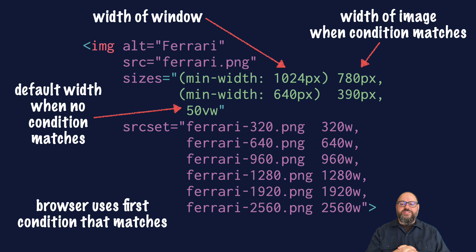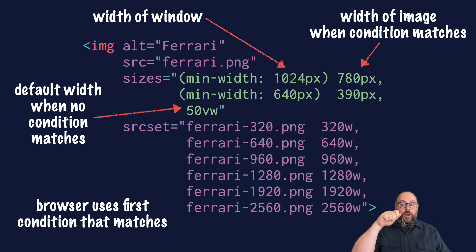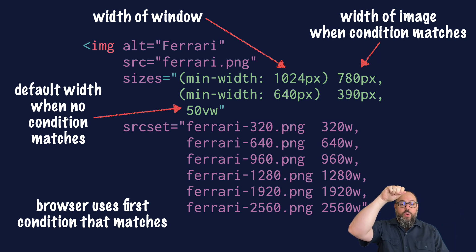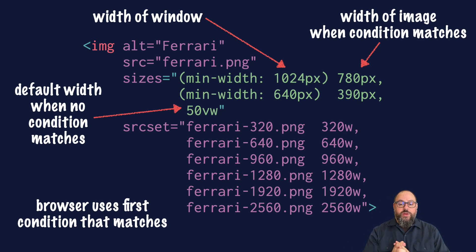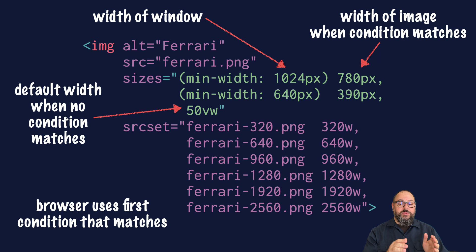Of course, these are just examples. The real world is messy. A user on a large display with a narrow window might get a smaller image. A user on an iPad Pro might get the large image in landscape mode, the medium image in portrait mode, and the small image in split screen mode. Some larger phones will qualify for the second rule in landscape mode. But that's the beauty of this system — you don't have to think about all these different form factors. You only have to consider what size the image will display based on the viewport width.